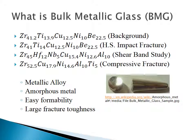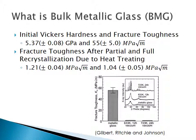Three different compositions of bulk metallic glass were utilized in analysis of high-speed fracture. The first composition was utilized in high-speed impact testing, the second in shear band studies, and the third in compressive fracture. Bulk metallic glass is a metallic amorphous alloy chosen due to its easy formability and large fracture toughness. Initial Vickers hardness and fracture toughness measure about 5.37 gigapascals and 55 megapascals times square root of meters. After partial and full recrystallization due to heat treating, fracture toughness was reduced to around 1.21 and 1.04 megapascals times square root of meters, respectively.